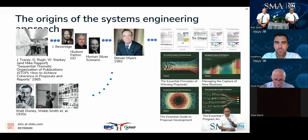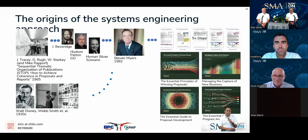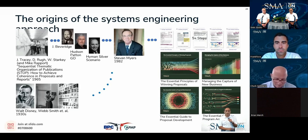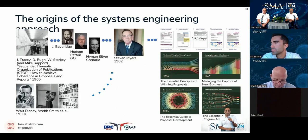You should add these four books to your bookshelf — they're available on Amazon. The SMA approach is based on systems thinking and agile principles. Its origins were in the 70s, and that's an evolution of the approach originally developed by Tracy, Ruge, and Starkey all the way back in 1962 — known as Sequential Topical Organization of Publications.